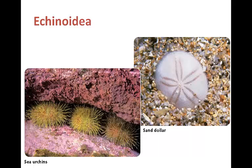Echinoidia — burrowing is a key characteristic of this class. They have a compact body enclosed in a hard endoskeleton called a test, made of calcium carbonate, which looks somewhat like a shell. The tube feet extend through pores in the test. They lack arms, but their test reflects the five-part pattern seen in sea stars and brittle stars. Some sea urchins have spines containing venom useful for fending off predators. They can be herbivore grazers scraping algae from rocks, or filter feeders in the sand.